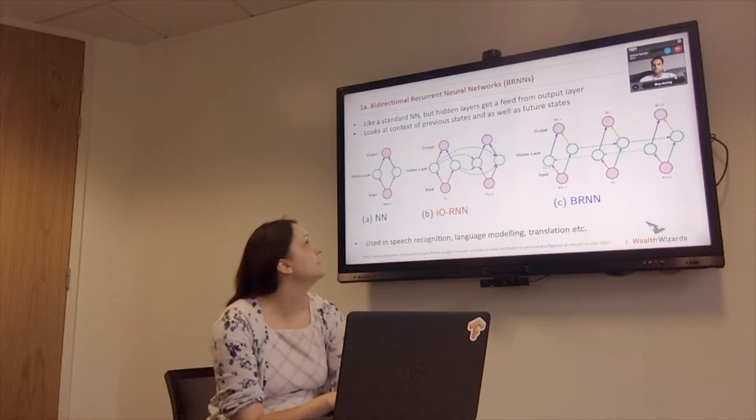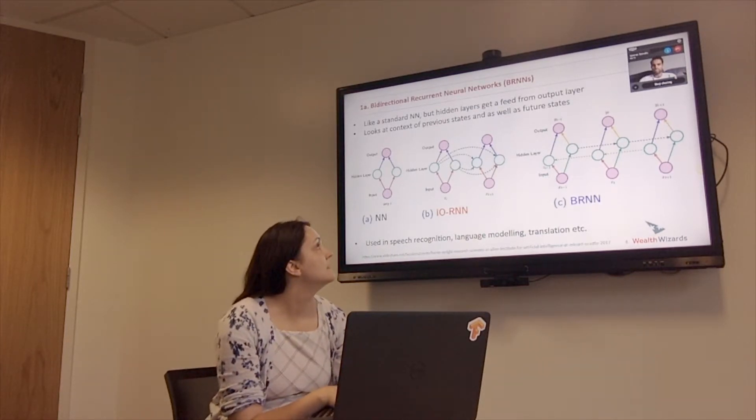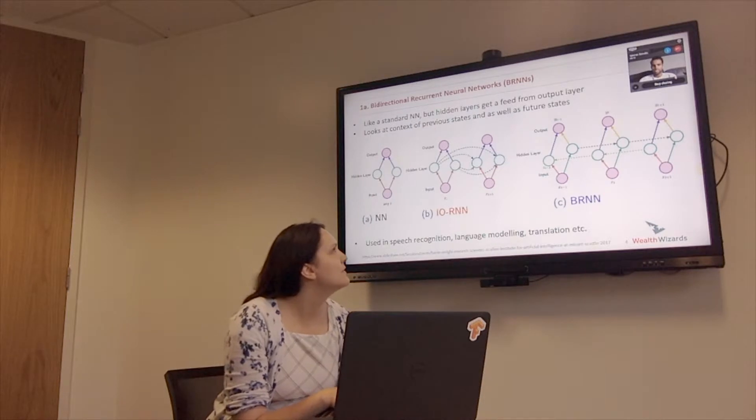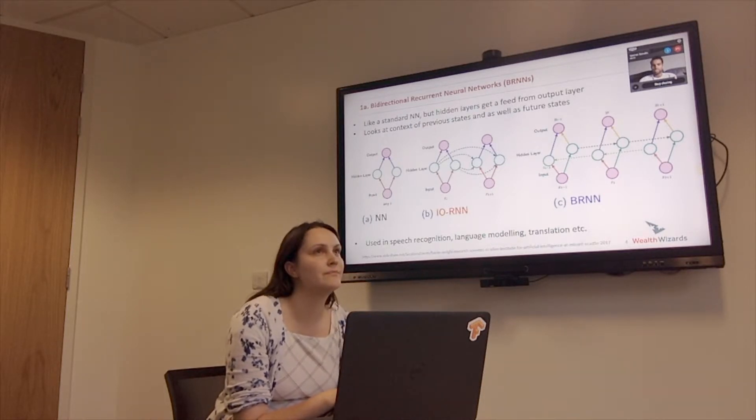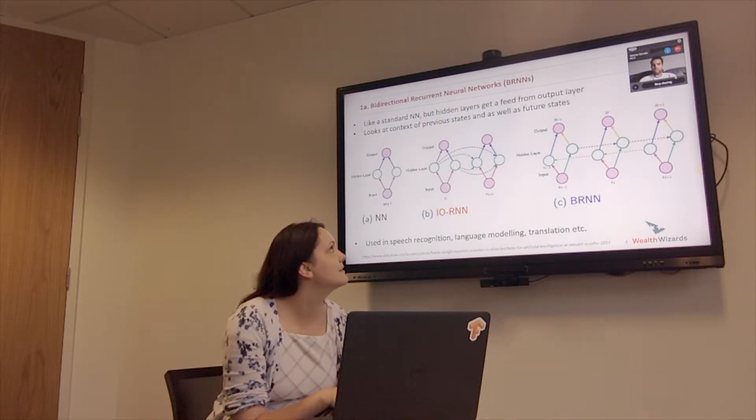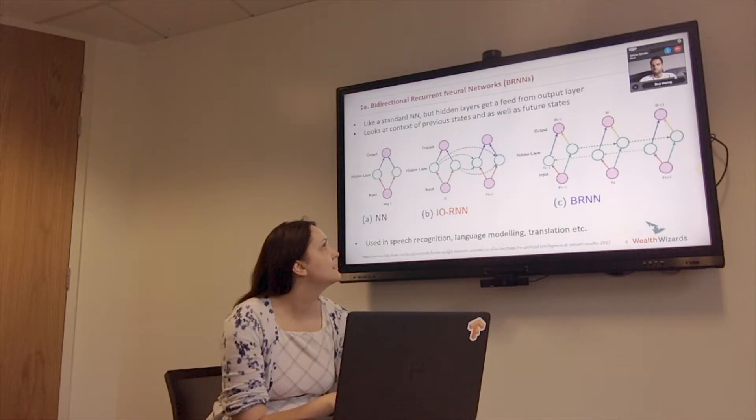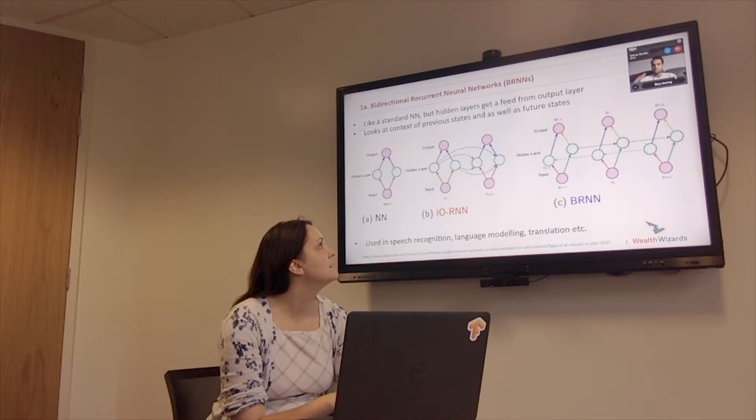And then... You're saying the recurrent neural network contains a state. Contains a what? State. I guess the usual neural network, every time you put an input through and get a hypothesis, it's independent all the time, right? Whereas in this case, every time you put an input through it, it kind of remembers something from the last thing. Yeah.